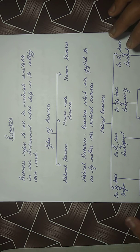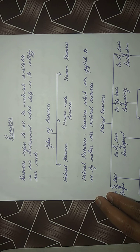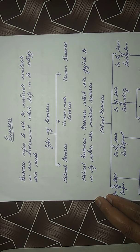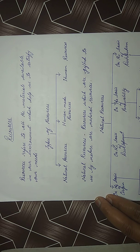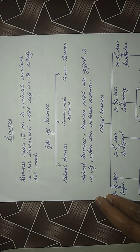So we'll start with the definition of resources. Resources refers to all the materials available in our environment which help us to satisfy our needs. There are different types of resources: natural resources, human-made resources and human resources.